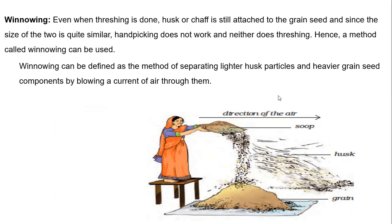Next is winnowing. Even when threshing is done, husk or chaff is still attached to the grain seed. And since the size of the two is quite similar, we cannot use handpicking or threshing to separate them from the grain. In this case, we use a different method — that is winnowing. Winnowing can be defined as the method of separating lighter husk particles and heavier grain seed components by blowing a current of air through them.